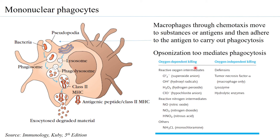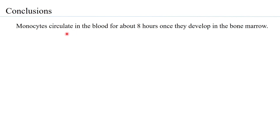Killing by macrophages can be either oxygen-dependent or oxygen-independent. With oxygen-dependent killing, reactive oxygen species are activated — nitric oxide, HNO2, etc. — which are responsible for killing bacteria. Oxygen-independent killing uses molecules such as defensins, tumor necrosis factor, lysozyme, and hydrolytic enzymes. Therefore, phagocytosis by macrophages can resort to both ways of killing.